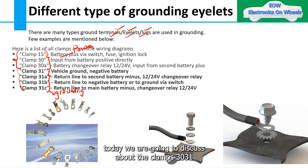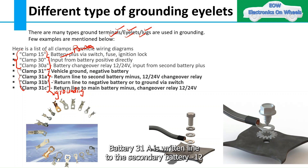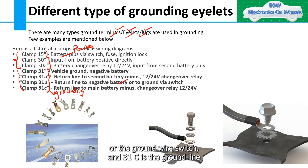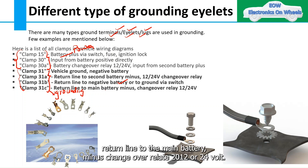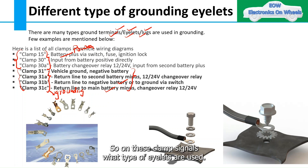Today we are going to discuss clamp 30, 31a, 31b, and 31c. Clamp 31 is vehicle ground, which is the negative battery. 31a is the return line to the secondary battery minus 12 or 24V changeover relay. 31b is the return line to the negative battery or the ground wire switch. 31c is the ground line return line to the main battery minus changeover relay, 12 or 24 volt.